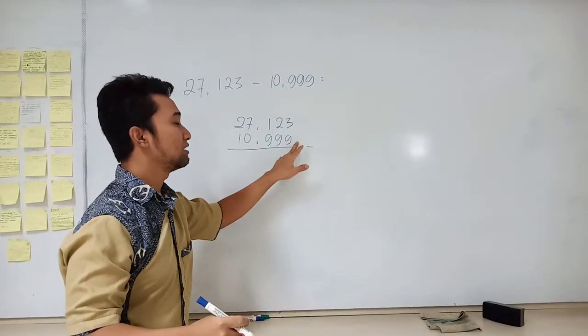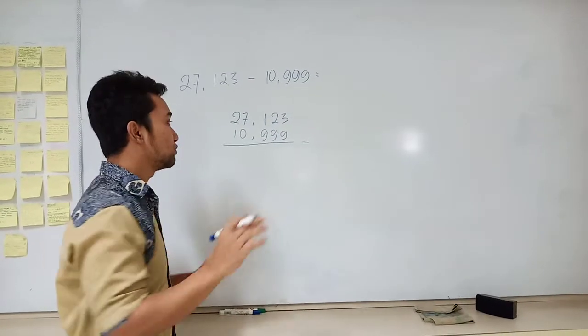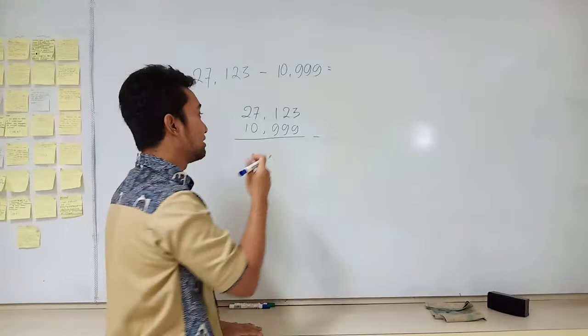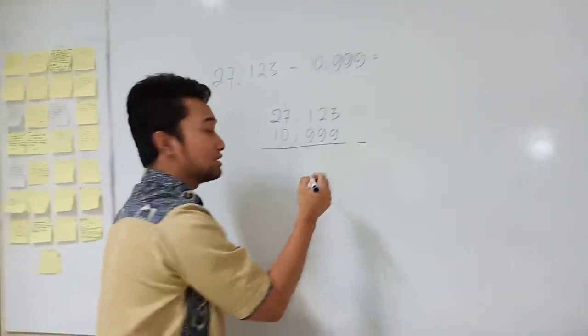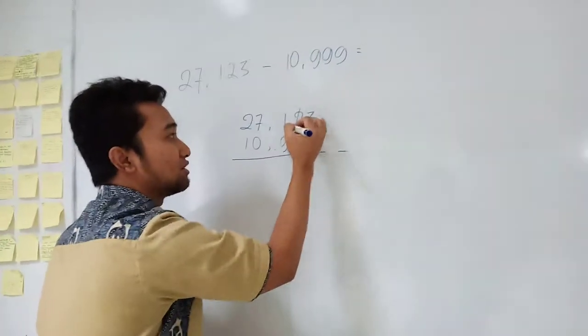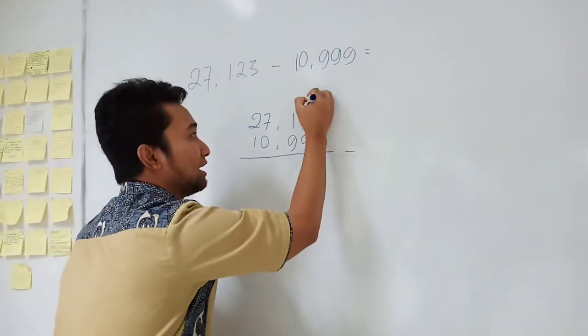Okay, 3 minus 9, you cannot directly. So you have to borrow from the back one, on the top one. Okay, so to be 13. 13 minus 9 is 4. And then because this is the comma here, 1 has to be 11 now.